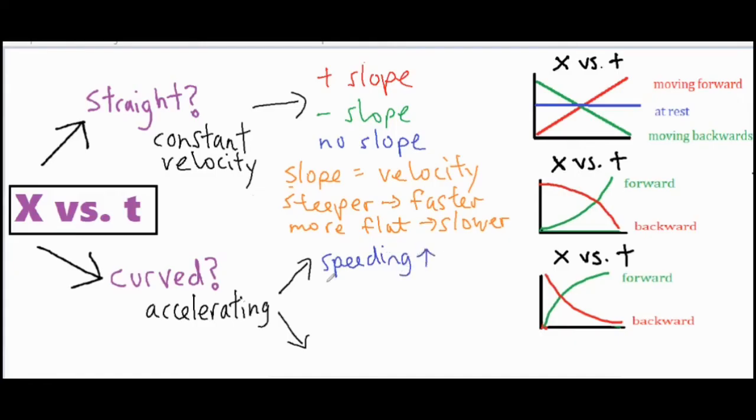They are speeding up and slowing down. If it's speeding up then we're looking for a curve that is becoming progressively steeper. If we have a graph that is slowing down then we're looking for one that is becoming more flat.